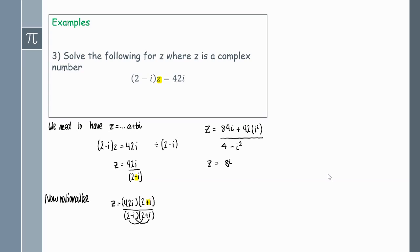Again replace minus 1 everywhere you see i squared. On the numerator we'll get 84i then minus 1 times 42. On the denominator I'll get 4 minus minus 1. Then all you have to do is clean this up. On the top we have 84i minus 42 and on the denominator we have 4 plus 1 which is just 5.